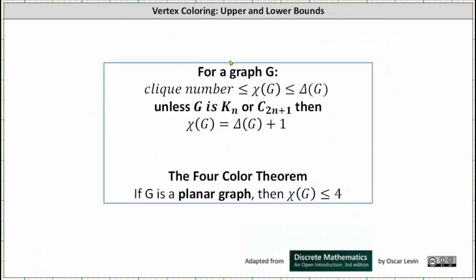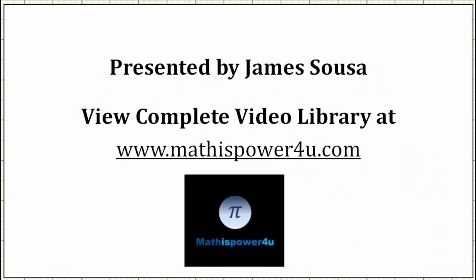To summarize: for a graph G, the chromatic number is greater than or equal to the clique number and less than or equal to delta(G), unless G is a complete graph or an odd cycle, in which case chi(G) = delta(G) + 1. From the Four Color Theorem, if G is a planar graph, then chi(G) ≤ 4. I hope you found this helpful.